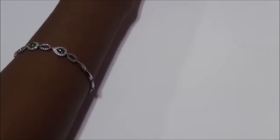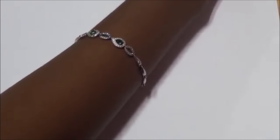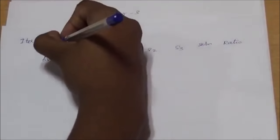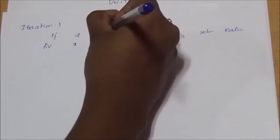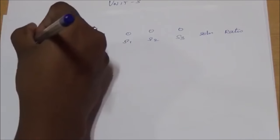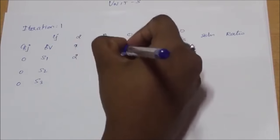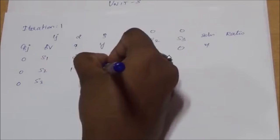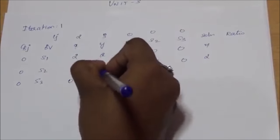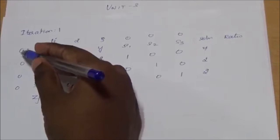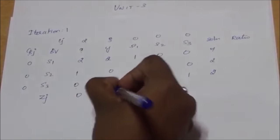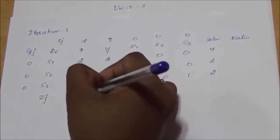First iteration: we list the basic variables present in the constraints, write their corresponding coefficients in the objective function, write the slack variables and their coefficients, then write the coefficients of each variable in each constraint. We then find zj by multiplying the column values with the corresponding CBj column values, multiplying each element, adding the three product values, and writing the result in zj.